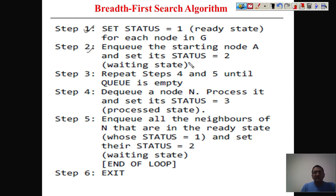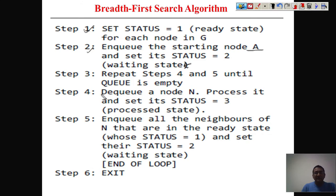Step three: repeat steps four and five until the queue is empty. We perform this operation in a loop until the queue becomes empty; the moment it becomes empty, you stop and your answer is available. Step four: dequeue node N and process it. Whenever you apply the dequeue operation — taking something from the queue — that node has been processed, and we set its status to three.